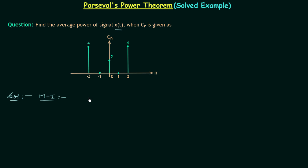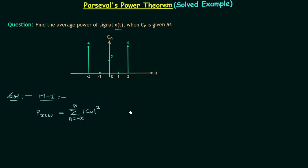Let's move to method number one. According to Parseval's power theorem, the average power of signal x(t) is equal to the summation from n equal to minus infinity to infinity of the modulus of the coefficient c_n, whole squared.